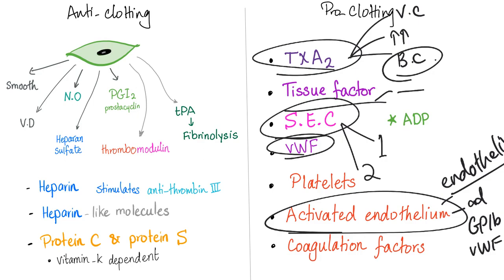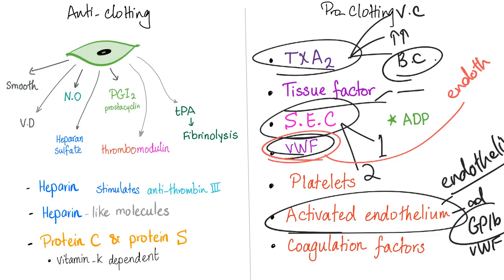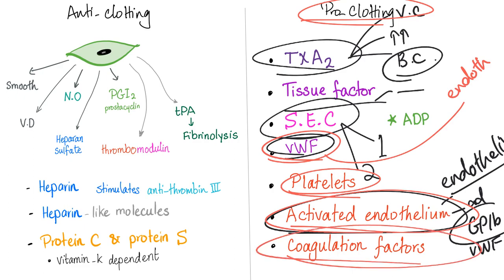The von Willebrand factor is important for adhesion. Who synthesizes it? The endothelium — specifically the Weibel-Palade bodies. Who stores it? The endothelium and the platelets, as it is part of the alpha granules in the platelets. Platelets are pro-coagulation in a big way. The activated endothelium and the coagulation factors, which are beta globulins secreted by the liver, are also pro-clotting.